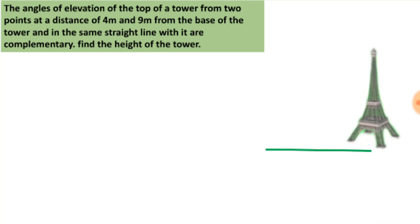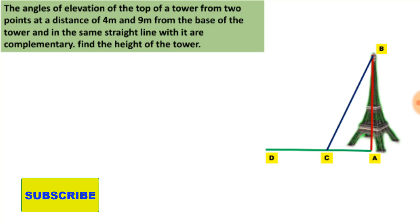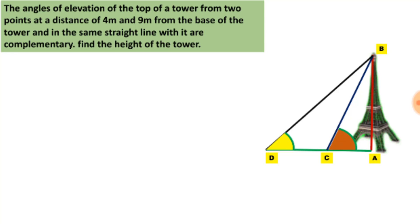We take a straight line as the ground and place a tower on it. Let us assume the height of the tower as AB. We consider two points on the same straight line: C is 4m away from point A, and D is 9m away from point A. From these two points, the observer views the top of the tower at certain angles of elevation, which are given to be complementary to each other.